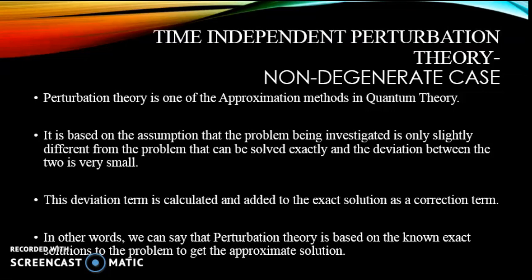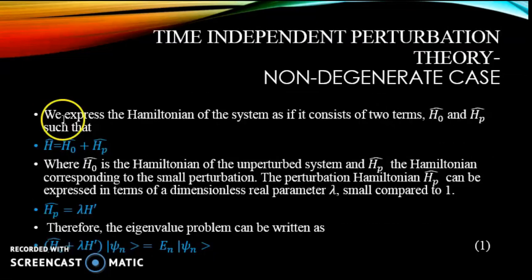In other words, perturbation theory is based on the known exact solutions to the problem. To get the approximate solution, we express the Hamiltonian of the system as consisting of two terms H0 and Hp, such that H = H0 + Hp, where H0 is the Hamiltonian of the unperturbed system and Hp is the Hamiltonian corresponding to the small perturbation. The perturbation Hamiltonian Hp can be expressed in terms of a real dimensionless parameter lambda, which is very small compared to one.